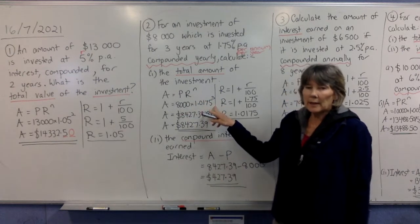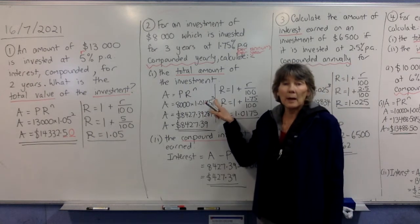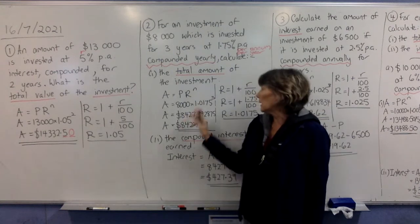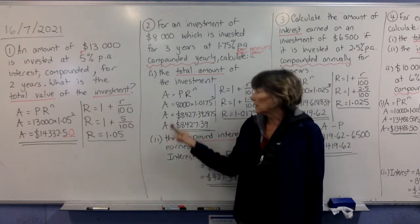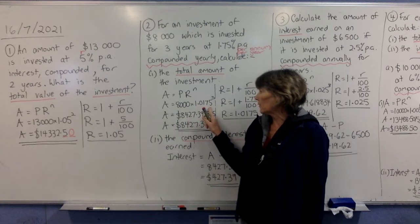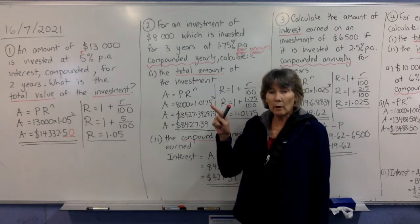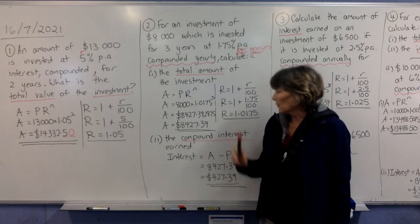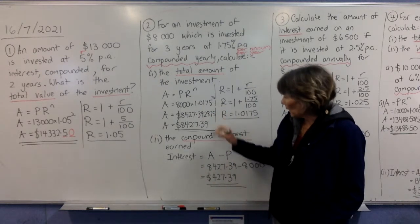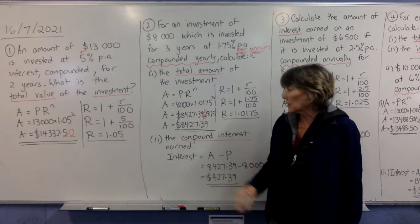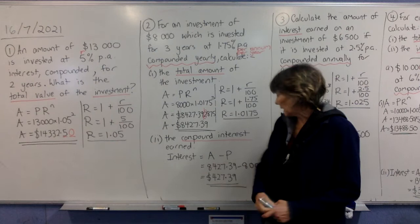Put all that in your calculator. Make sure you know where your power key is. You might have done that last one with the squared key, but you need your power key for this one. So it's 8,000 times 1.0175 to the power of 3 equals. And it should give you that answer. When we round off to two decimal places for money, that's less than 5. So it's 0.39 on the end.